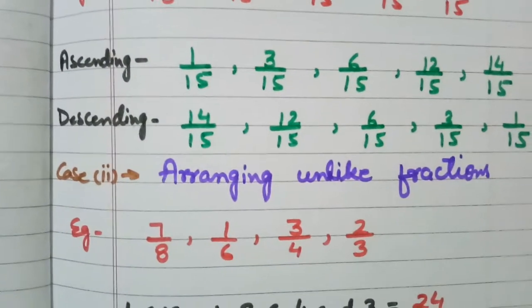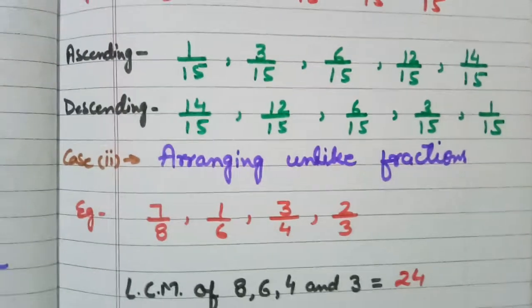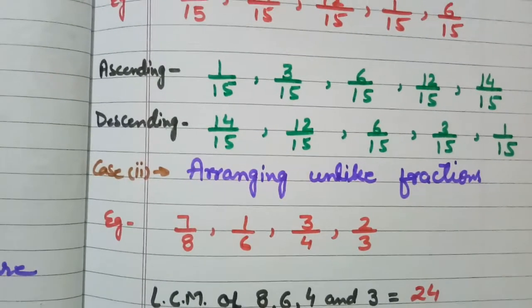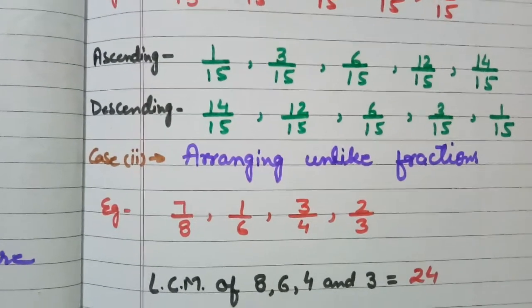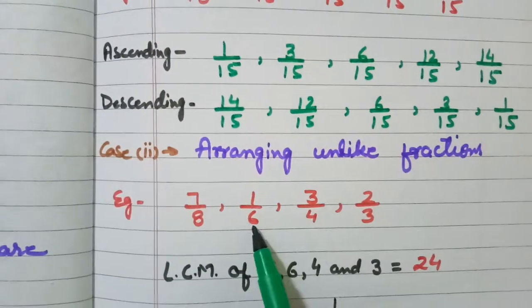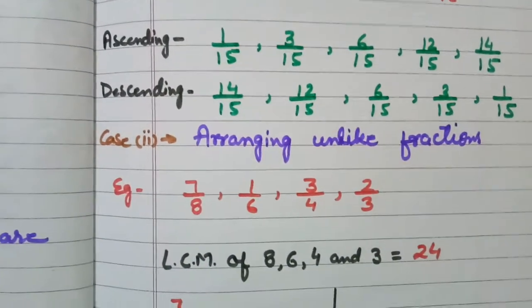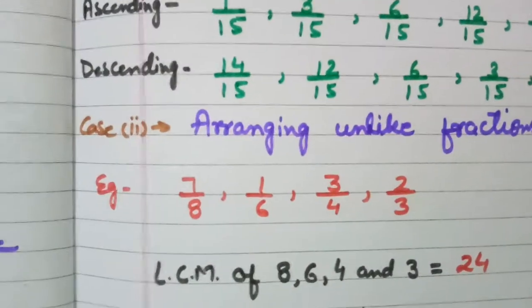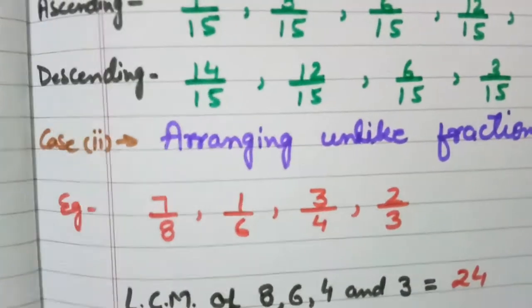Here is case 2, that how can we arrange unlike fractions into ascending or descending order. I have taken one example, the example is 7 upon 8, 1 upon 6, 3 upon 4 and 2 upon 3. You all can see that the denominators are different, that means the fractions are unlike.